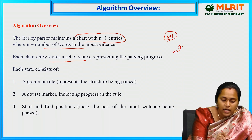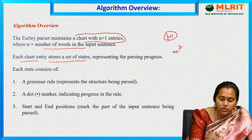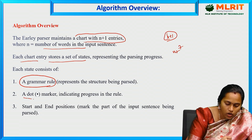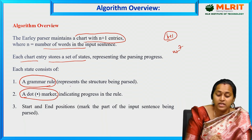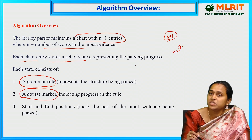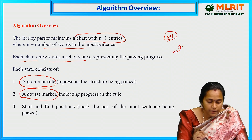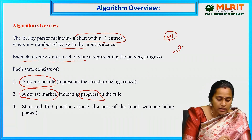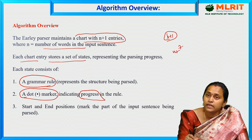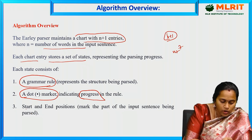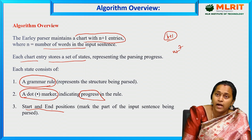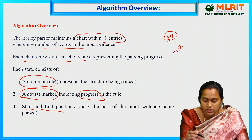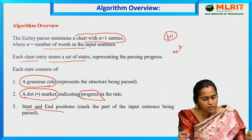The states consist of a grammar rule and a dot marker. The grammar rule represents the structure of the parsing - which type of structure is to be parsed. The dot symbol defines the progress in the rule. Each state also has start and end positions that mark the part of the input sentence being parsed - which position parsing is starting from.